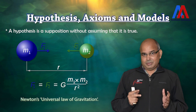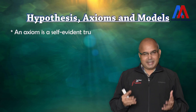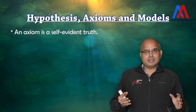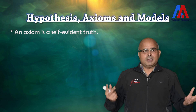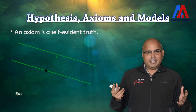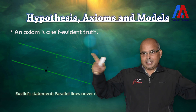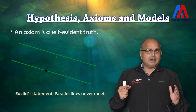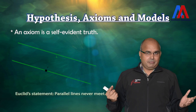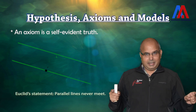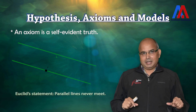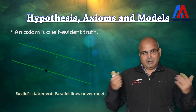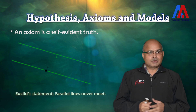The second important concept is axiom. An axiom is similar to a hypothesis but is a self-evident truth. For example, Euclid stated that two parallel lines will never meet. He did not prove it, but we know from common sense that the distance between parallel lines does not reduce, and therefore they will not meet. That is a self-evident truth — that is what is called an axiom.